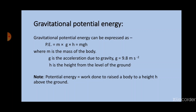Now let us look at the expression for gravitational potential energy. It can be expressed as: potential energy is equal to m into g into h, which is equal to mgh. Where m is the mass of the body, g is known as the acceleration due to gravity and it has a value equal to 9.8 m per second squared, and h is the height from the level of the ground.